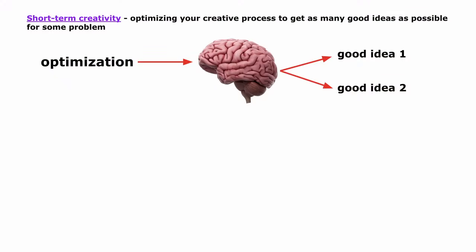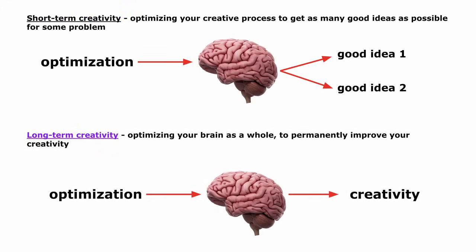So hope you liked it so far. So now, with all the information we've learned, how can we improve creativity? And there are two main types of improvement that I'll talk about separately. The first is short-term creativity. That is, for a particular problem, how can you optimize your creative process to get as many good ideas as possible for that problem? And the second is long-term. That is, how can you optimize your brain as a whole, forever, to permanently improve your creativity for every problem in the future? Let's start with short-term.